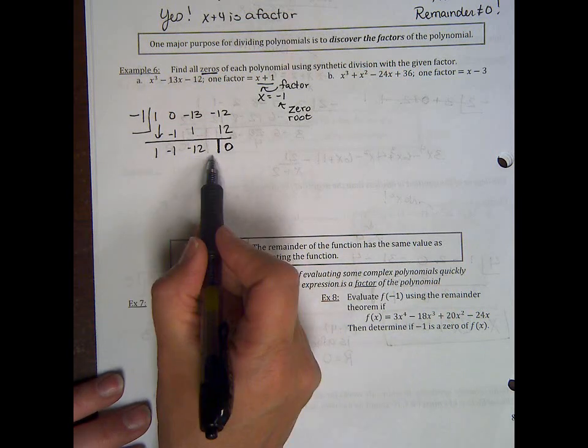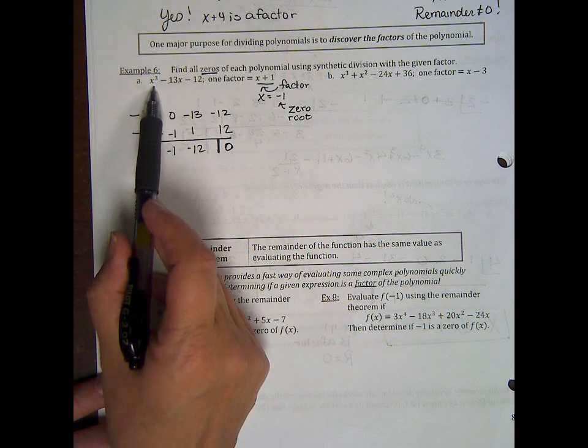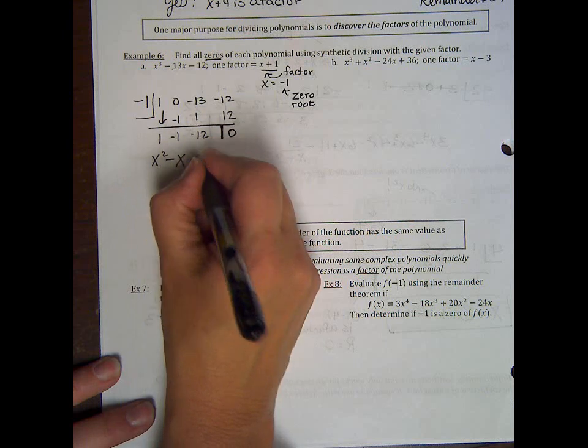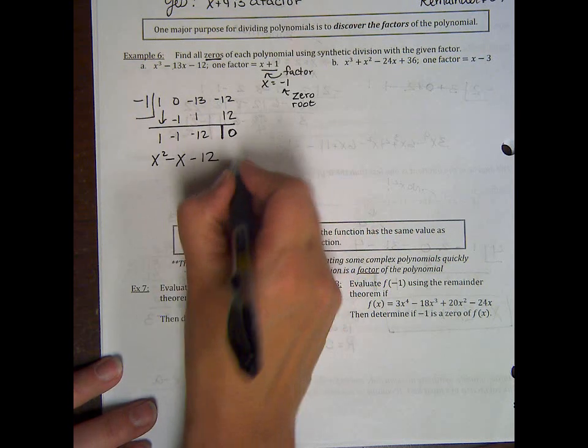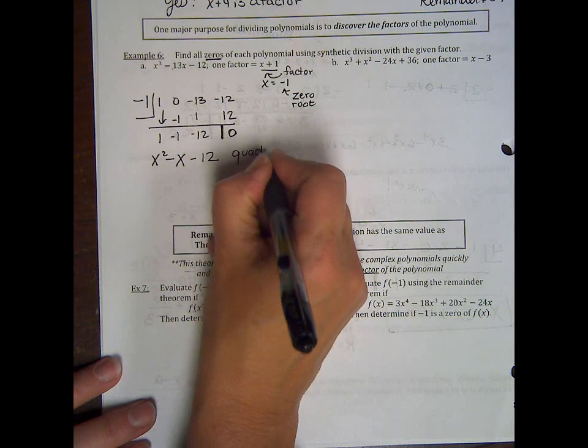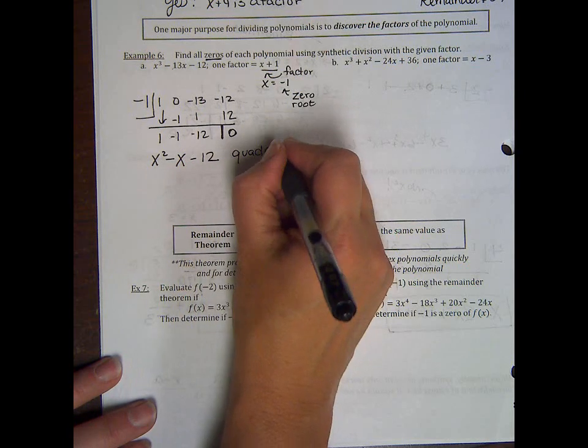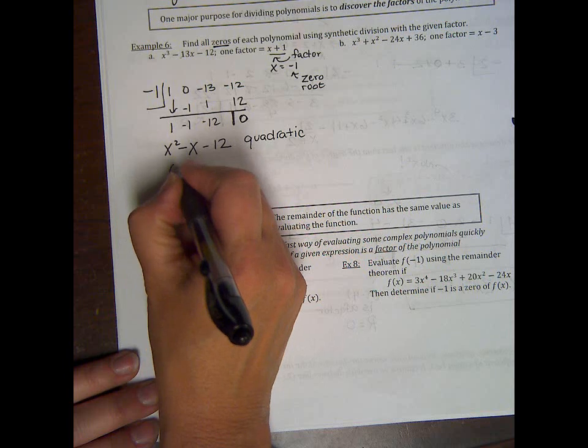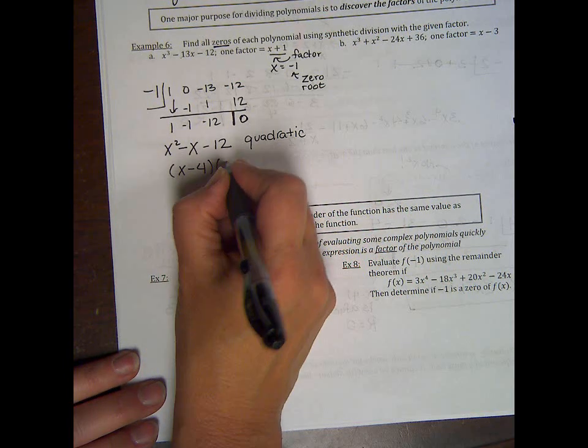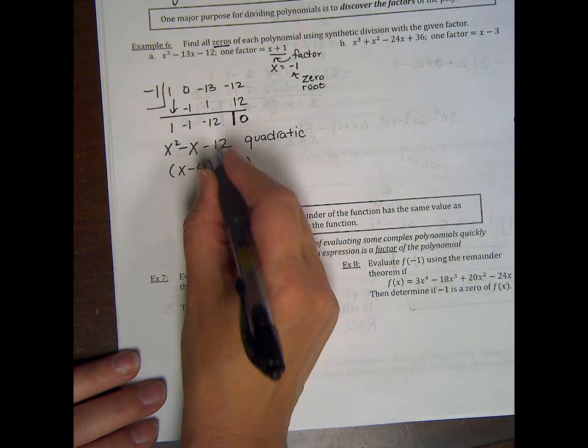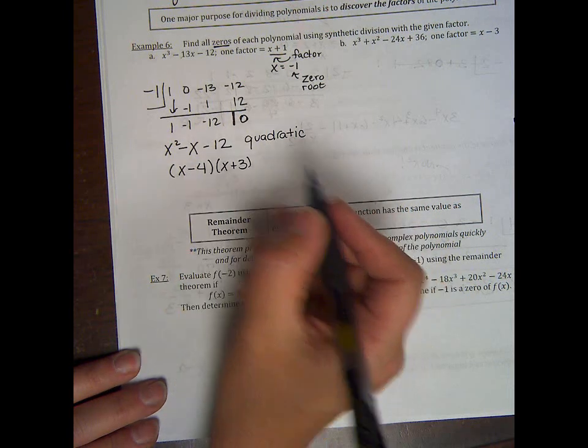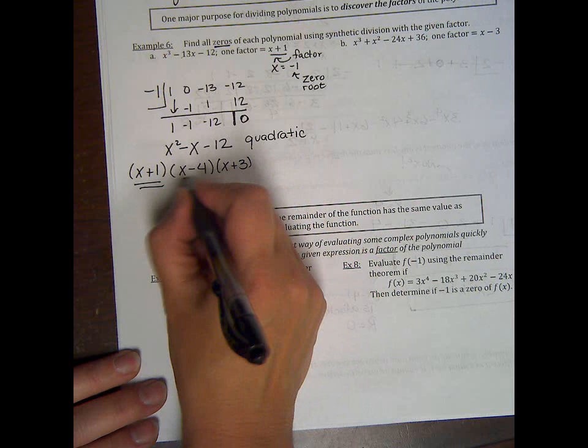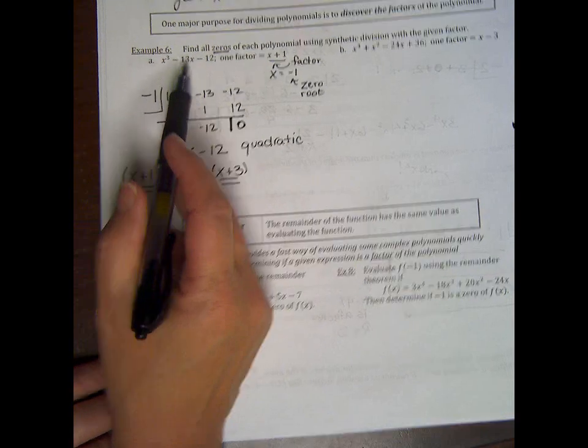Now remember, once we divided, we depressed this equation. It was an x cubed, minus 1x minus 12. Well this is quadratic, and we can find more roots from a quadratic by factoring or doing quadratic formula. Well this factors easy. This is x minus 4 and x plus 3. Two numbers that multiply to be negative 12, add to be negative 1. So don't forget the factor was already given to me as x plus 1. So these are the three factors. It should be three factors because it's cubic.